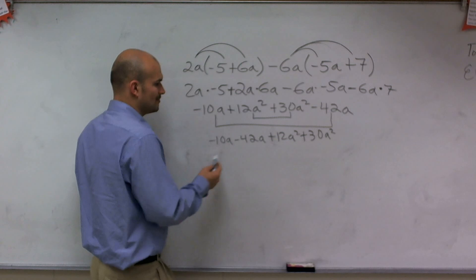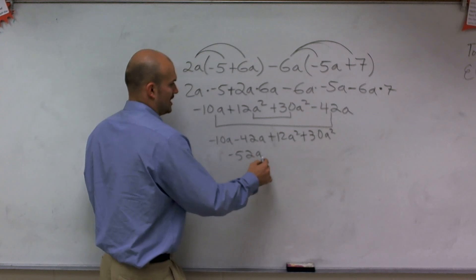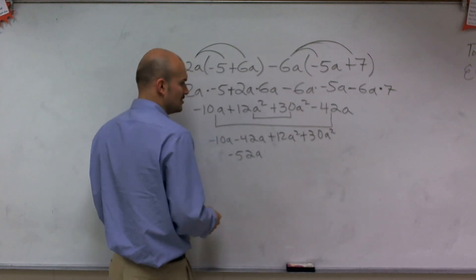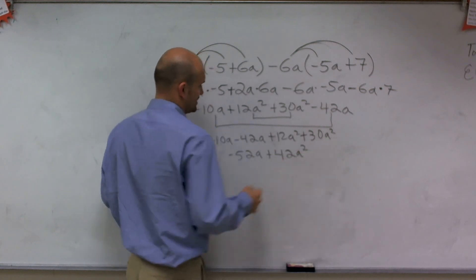It just makes it a little bit simpler for me to look at this and say negative 10a minus 42a is a negative 52a. And 12a squared plus 30a squared is going to be a positive 42a squared.